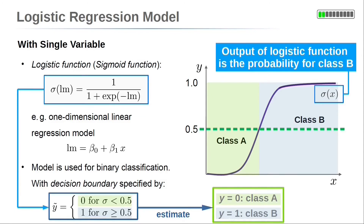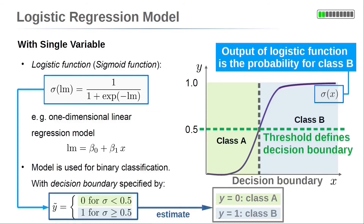Note that sometimes the logistic function with a linear model itself is also called the logistic regression model. But you need to specify a threshold to decide between class A or B — here we choose sigma equals 0.5. This threshold is sketched by a green dashed line and defines a decision boundary, determining where the areas of classes A and B are separated along the x-axis. This separation line, sketched in grey, is the decision boundary. Note that the threshold value of sigma equals 0.5 can be any other value between 0 and 1 as well, and we will go into the details later in this lecture.